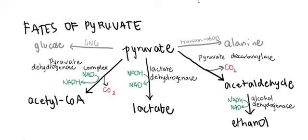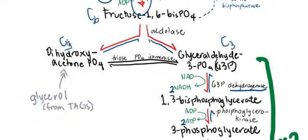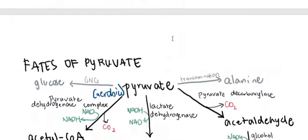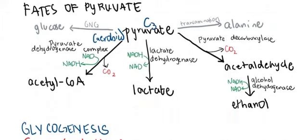Acetyl-CoA is a two-carbon compound because pyruvate is a three-carbon compound, and removing CO₂ takes away one carbon. In the anaerobic state, pyruvate is converted by lactate dehydrogenase to lactate. Here NADH becomes NAD⁺, as opposed to the aerobic direction where NAD⁺ becomes NADH. A useful trick: if a dehydrogenase is named after the substrate (like pyruvate dehydrogenase), then NAD⁺ becomes NADH. If named after the product (like lactate dehydrogenase), then NADH becomes NAD⁺.